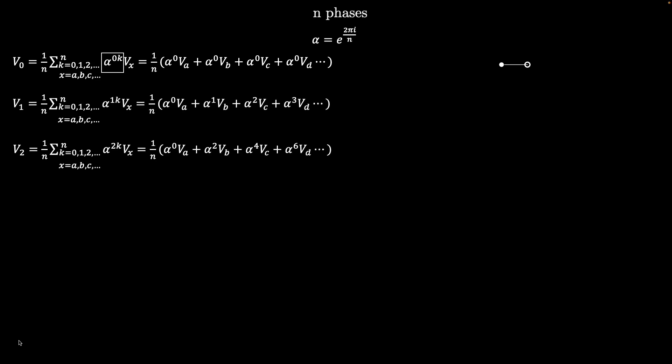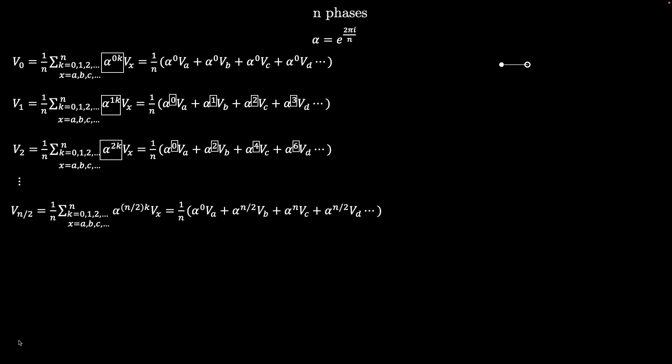The symmetrical component equations for any number of phases can be found in a pretty straightforward way. For n-phases, alpha is the complex value that's one nth turn around the complex unit circle. The V0 component will always measure the distance from the system's neutral to the geometric center of the system. From there, the powers of the alpha term take on integer multiples of the component being measured. So for V1, the powers of alpha are 1, 2, 3, and so on. And for V2, the powers are 2, 4, 6, etc. And the pattern continues.